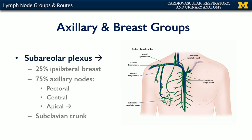With respect to the pectoral region and the axillary region — the anterior thorax, the chest, and the armpits colloquially — we have a very distinctive pattern of lymphatic drainage with respect to potential metastasis of breast cancer.